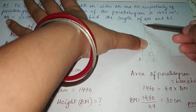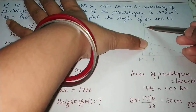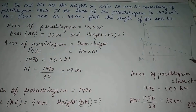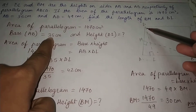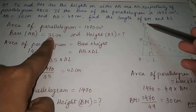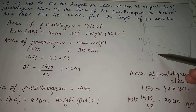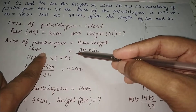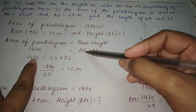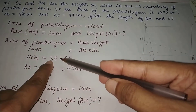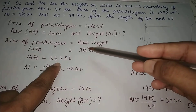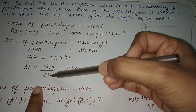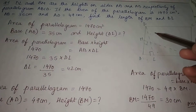Taking DL perpendicular to AB: AB is the base and DL is the height. The base value AB is 35 cm but the height DL is not given — we need to find it. Using area of parallelogram equals base times height: 1470 equals 35 times DL. Therefore DL equals 1470 divided by 35, which gives 42 cm.